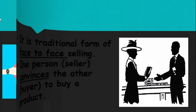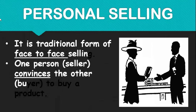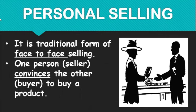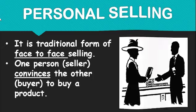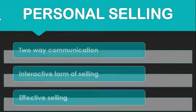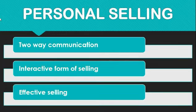Personal selling is a traditional form, also called face-to-face selling. When one person, that is a seller, convinces the other person, that is the buyer, to buy a product, then it is personal selling. Its characteristics include: it is a two-way communication between buyer and seller, it is an interactive form of selling, and it is very effective because a personal touch is involved.